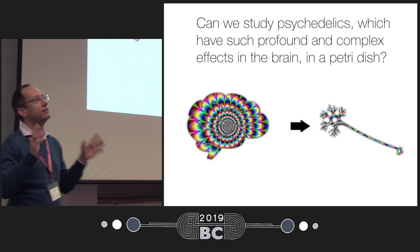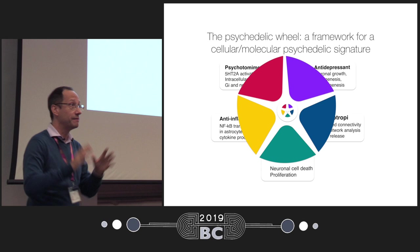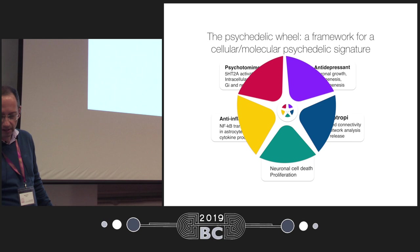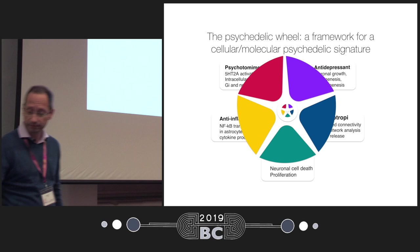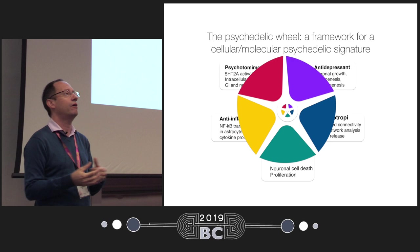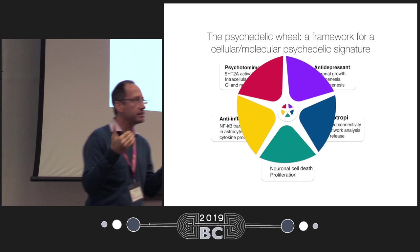Of course, we know psychedelics have some link to — they activate serotonergic receptors — but what exactly happens downstream of this effect? What happens within the cell, not only in terms of cellular aspects, but also in terms of the molecular pathways and proteins that are activated after the receptor is triggered by psychedelics? This is what we decided to study using brain organoids. We can split the effects of psychedelics into: psychotomimetic effects caused by activation of serotonergic receptors, antidepressant effects, nootropic effects, anti-inflammatory effects, and cell death or cell survival effects.